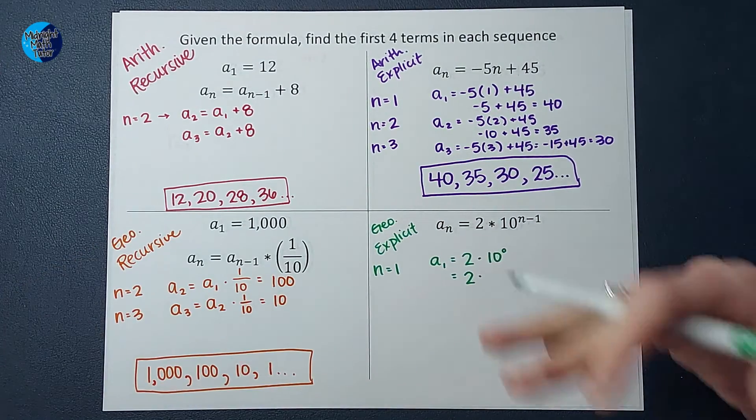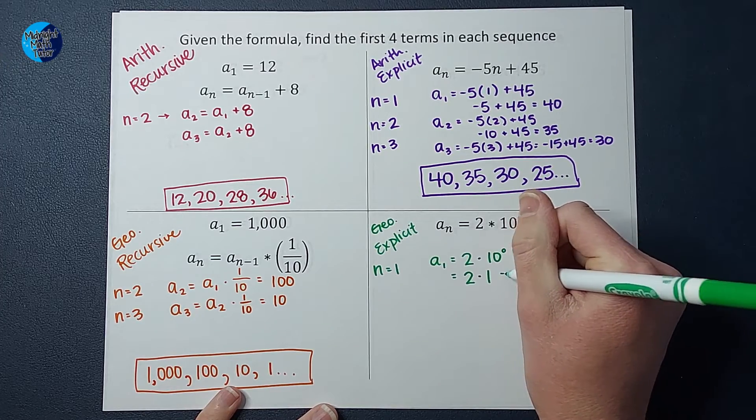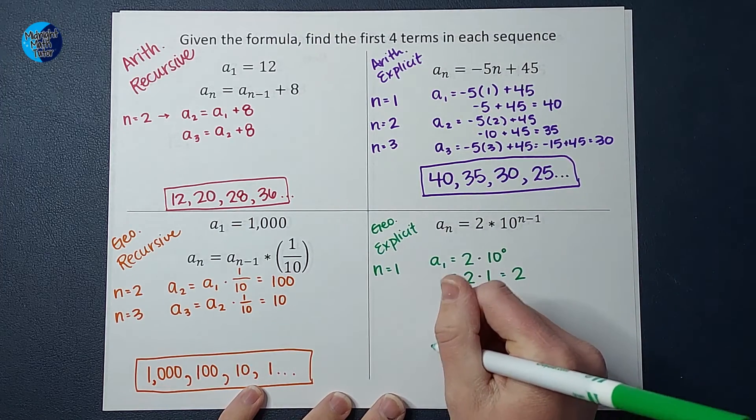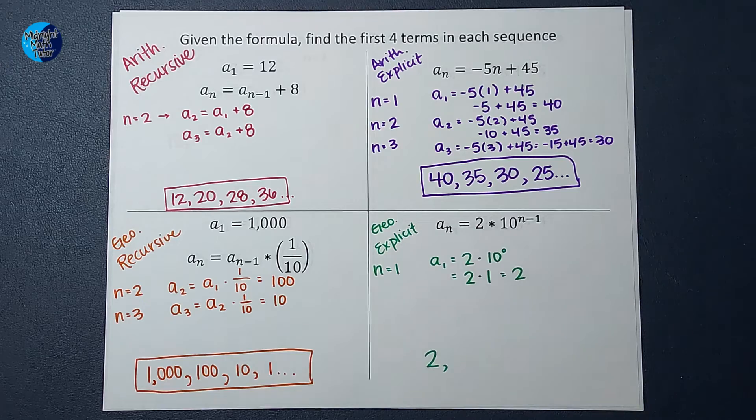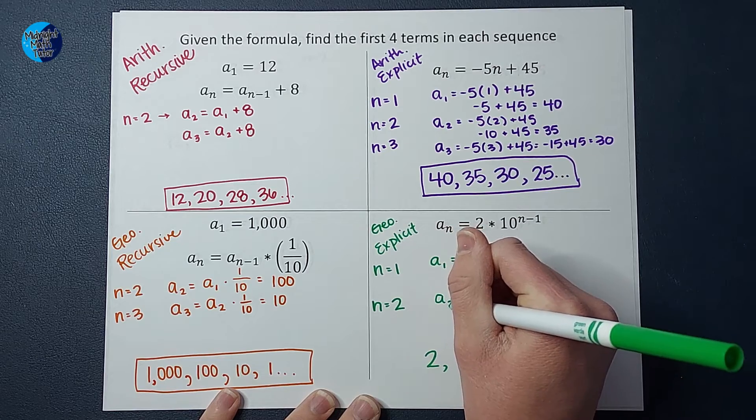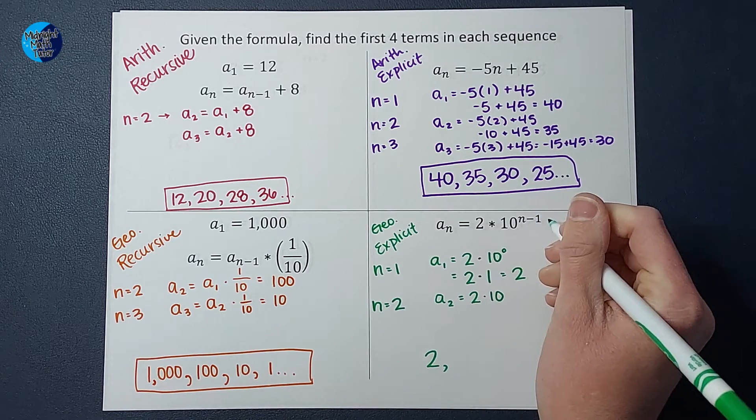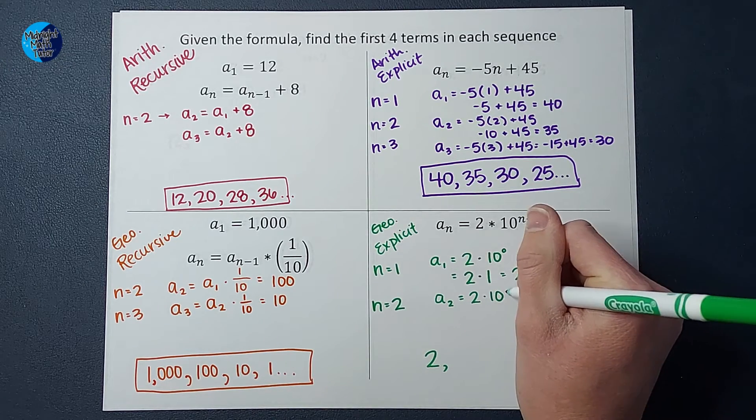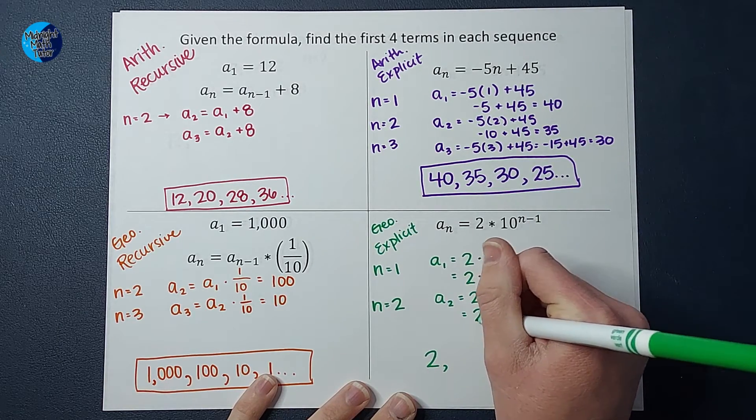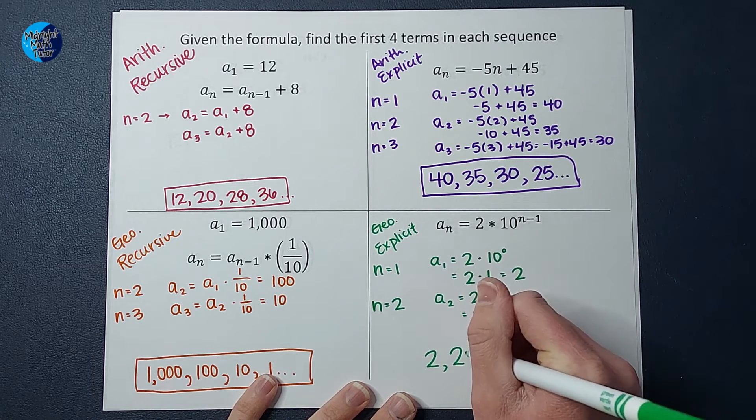If you're wondering why, I'll link a video in the corner. But 10 to the 0 power is 1. So I end up with 2 times 1, which is just 2. So a sub 1 is 2, meaning the first number in this sequence is 2. What's the second number in this sequence? A sub 2 is equal to 2 times 10 to the n minus 1 power. I'm plugging in 2 for n, so 2 minus 1 would give me 1. So 10 to the first. So 2 times 10 to the first is 10, so that gives me 20.